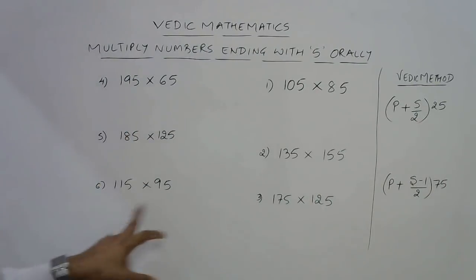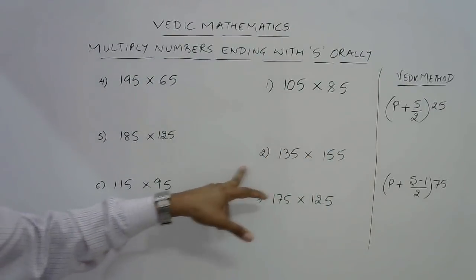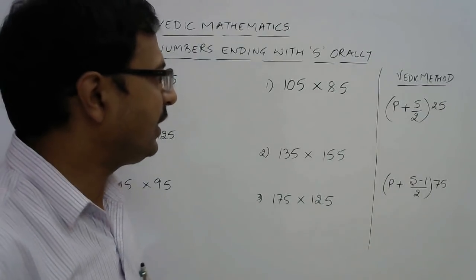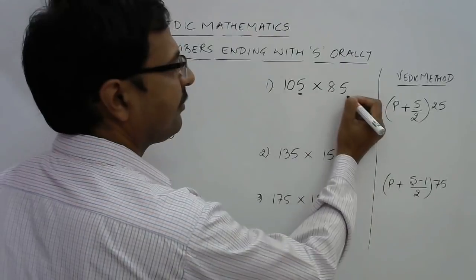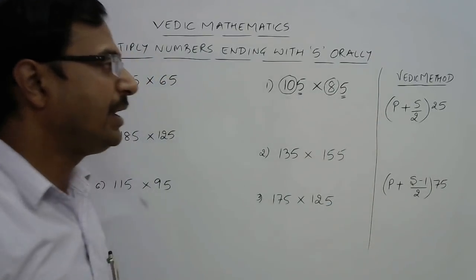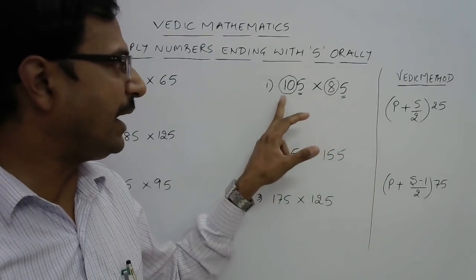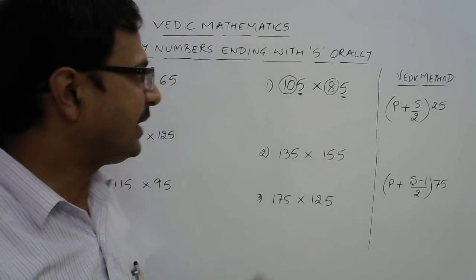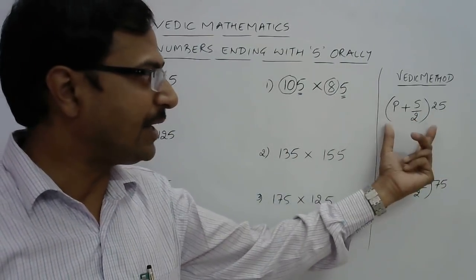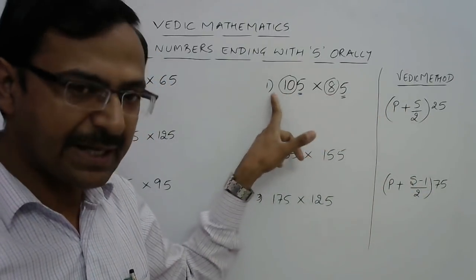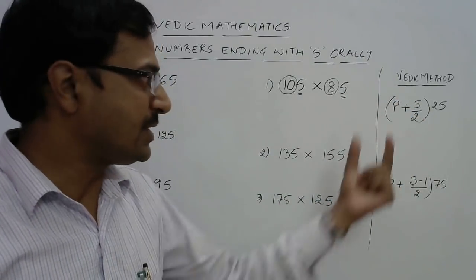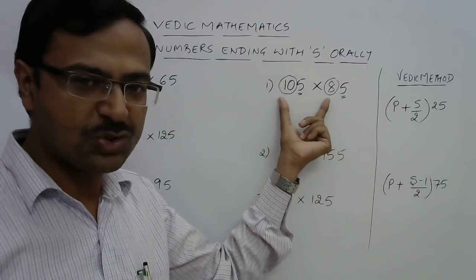If you leave the 5, whatever numbers you are left with, like 10 and 8, if the sum of these two numbers is even, like 10 plus 8 is even, then the answer will end with 25. In front of that, we will have the product of these two numbers, 10 and 8, plus the sum divided by 2. This is the method for even sum.